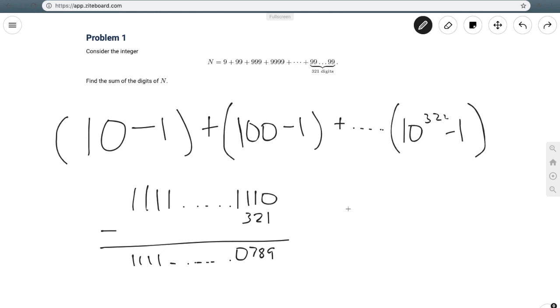Thus, I can easily calculate the sum here. I see that the number 1 appears 318 times. Then I add that to the number 0, add it to the number 7, the number 8, the number 9. And hence, my answer is going to be 318 plus 24, which is 342.